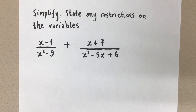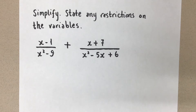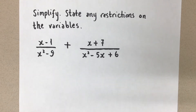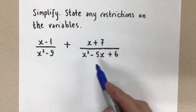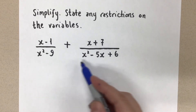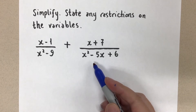When we add or subtract rational expressions, we have to think of this in the same way that we think of adding and subtracting fractions. And when we add or subtract fractions, we need a common denominator. And that's what we have to do here. To combine these two rational expressions, we need a common denominator, which we do not have right now.